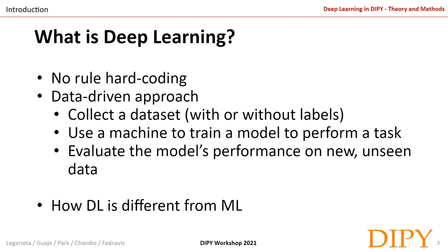We collect a dataset of images or other types of data along with their corresponding labels. Then we use a deep learning approach to train a network — learning the function or its parameters on a given task — and evaluate the network on new images or data. Deep learning is a subfield of machine learning: a mathematical framework for learning representations from data in a multi-stage way.